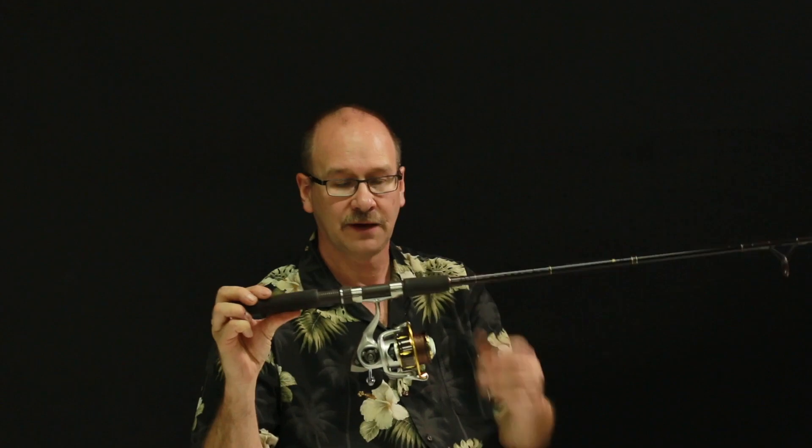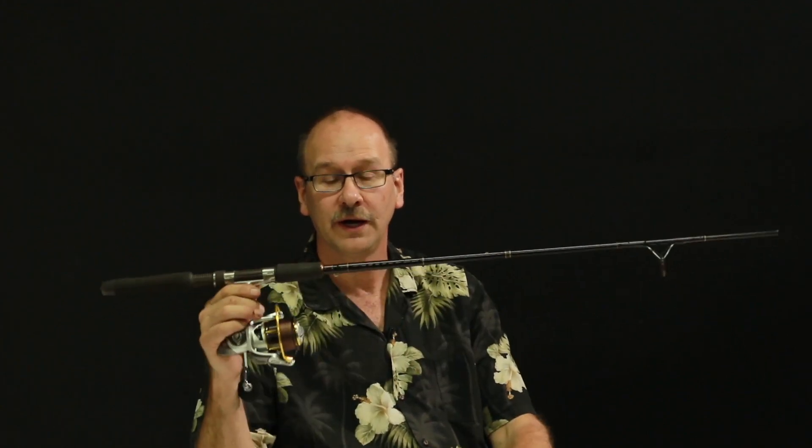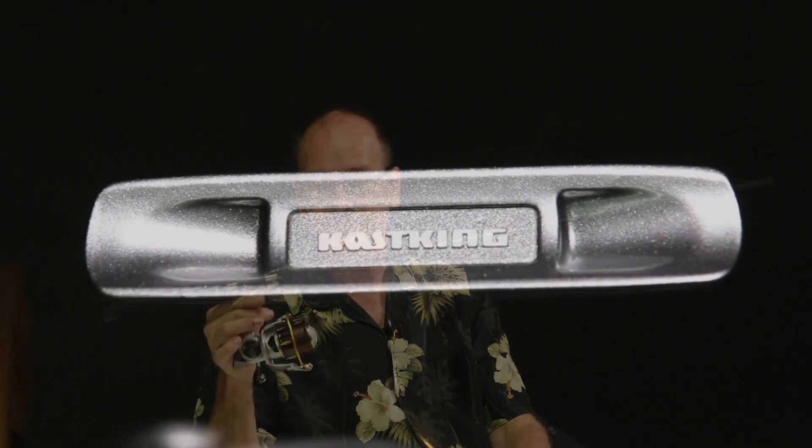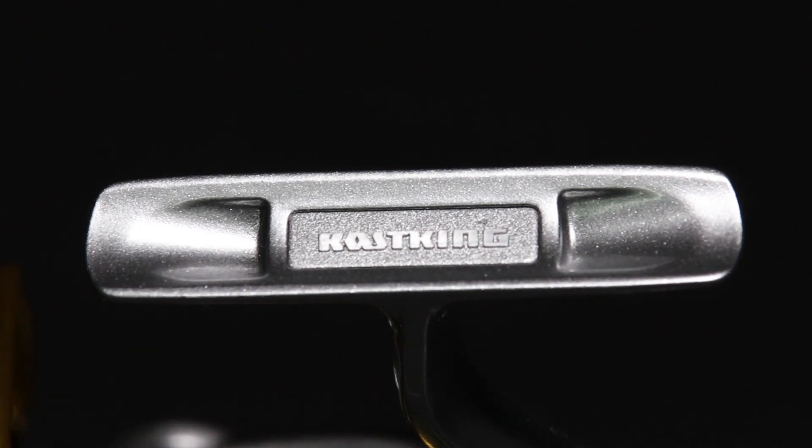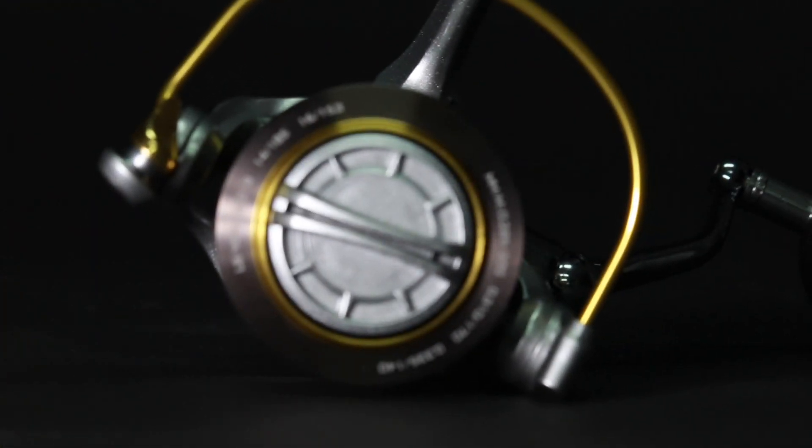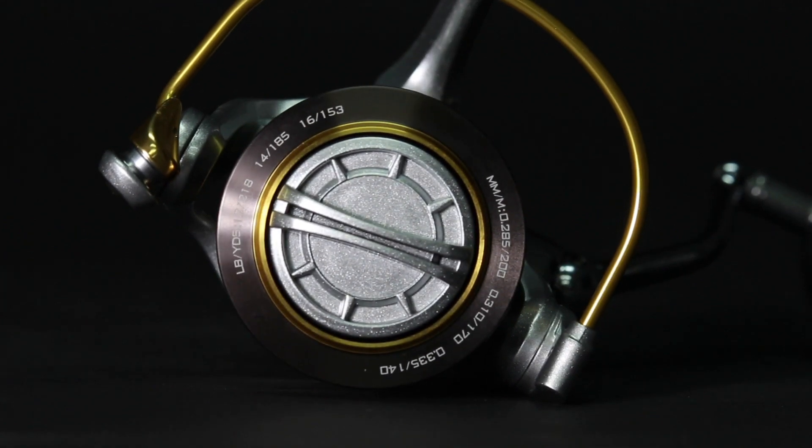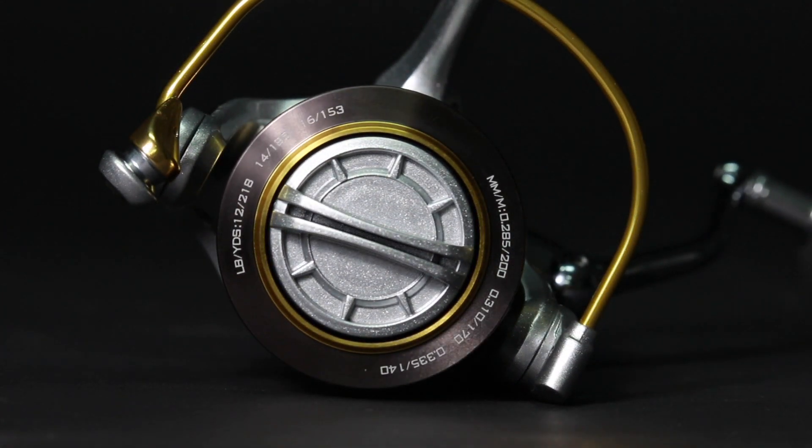So, we're going to take this thing apart and show you what the gears look like inside. I always like to do that on any new fishing reel that I obtain just to see what the quality is like. I have a feeling these things are going to be pretty good because CastKing is not one of these here today, gone tomorrow import companies that's just sticking their name on any old thing. They really screen their product very well and test them before they release it to the public. So, this one is no exception.